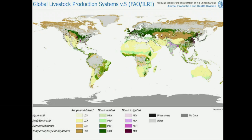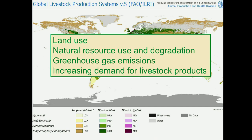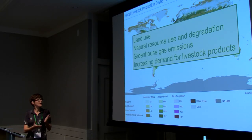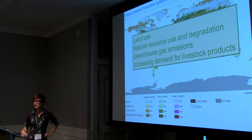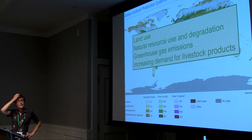This first slide is to remind ourselves about the importance of livestock systems in the agricultural sector globally. This map of livestock systems shows us the importance in terms of coverage, and livestock are also a notorious user of natural resources — water is a particular example. Livestock systems are also held responsible for a large share of greenhouse gas emissions from agriculture, and there is an increasing demand for livestock products projected to continue in the future.